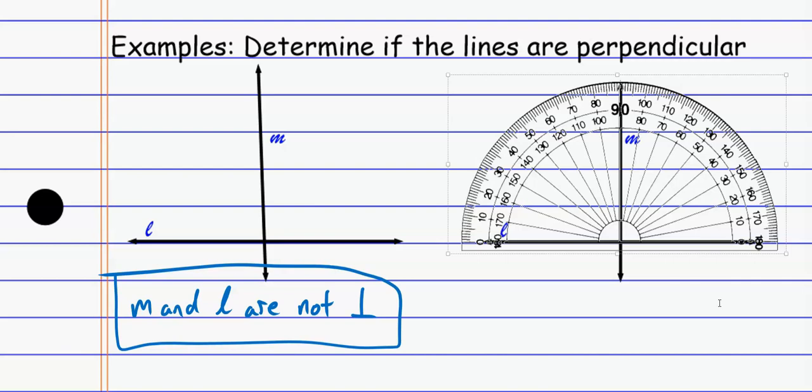So these are perpendicular. So I'm going to say these are perpendicular. And a nice, easy way to say that is just say M is perpendicular to L. So they are perpendicular.